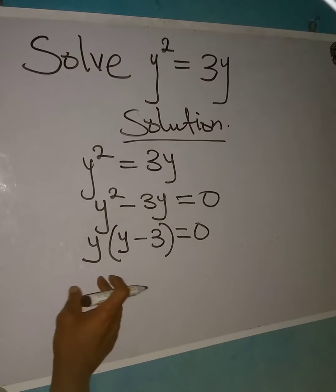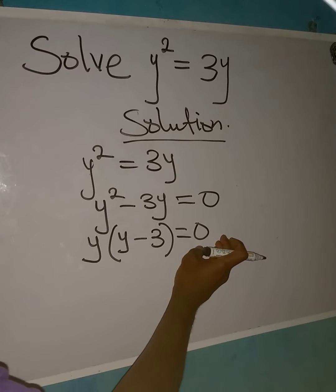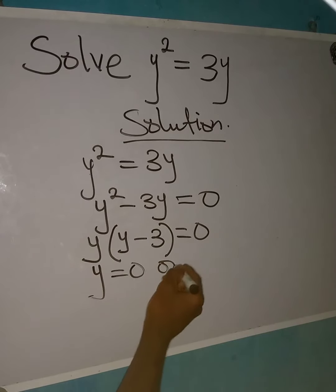And this means that either y is equal to 0, or this one is equal to 0, or at the same time both of them are equal to 0. So we have that y is equal to 0 or y minus 3 is equal to 0.